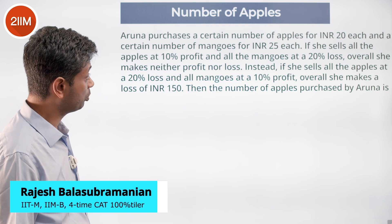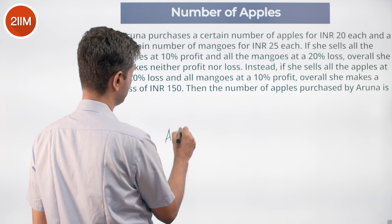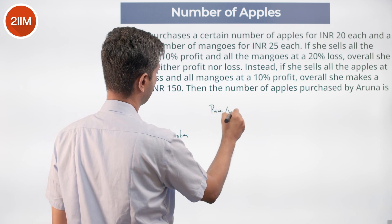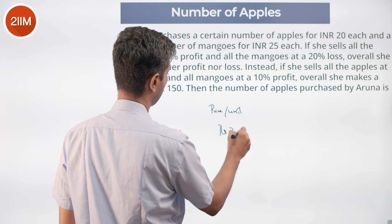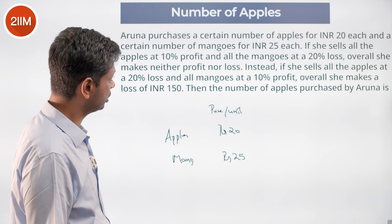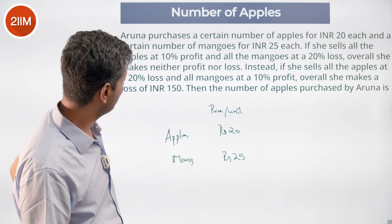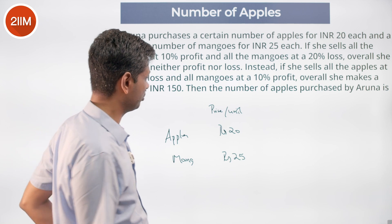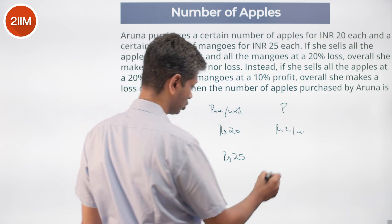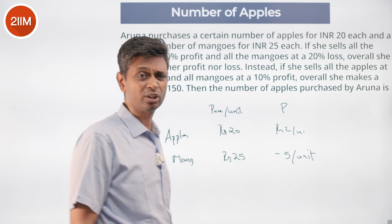Aruna purchased a certain number of apples for ₹20 each and a number of mangoes for ₹25 each. She sells all the apples at a 10% profit — that's ₹2 profit per unit — and all the mangoes at a 20% loss — that's ₹5 loss per unit. Overall, she makes neither profit nor loss.